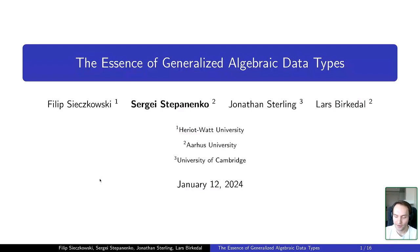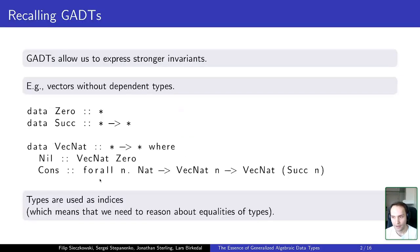So firstly, let's quickly recap what the GADTs are and what they're useful for. In a nutshell, they allow us to show stronger type invariants. For example, using GADTs we can express vectors with fixed length without usage of dependent types.